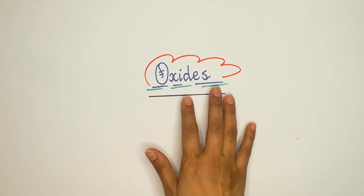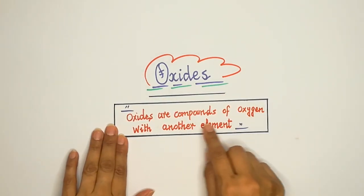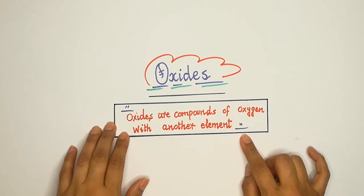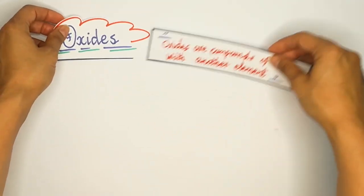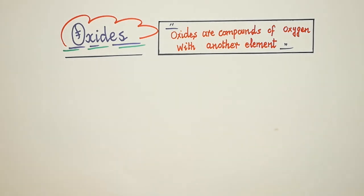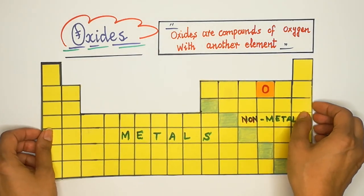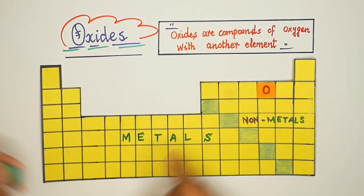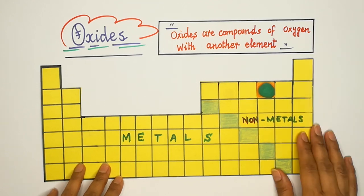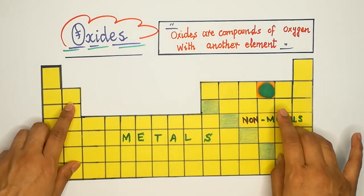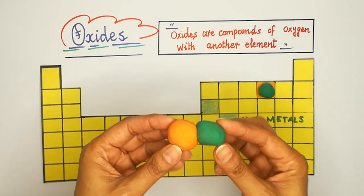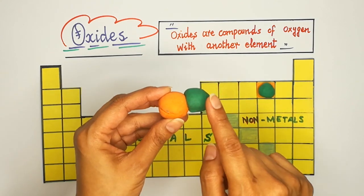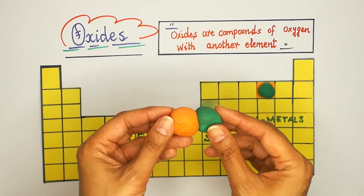Oxides are the compounds of oxygen with another element. When an oxygen atom combines with another element, we say these are oxides. In the periodic table, oxygen is in the sixth group. If this oxygen atom combines with a magnesium atom, it will form a compound called magnesium oxide. When one magnesium atom chemically combines with one oxygen atom, this is magnesium oxide.